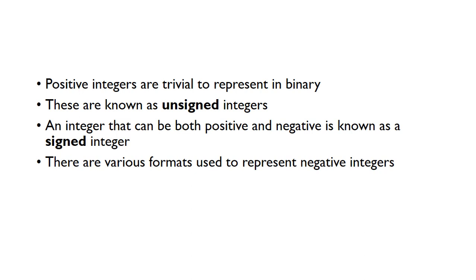Positive integers are very easy to represent in binary, and we call a positive integer just an unsigned integer. An integer that can be both positive and negative is known as a signed integer. We need to be aware that there are various formats used to represent negative integers in binary.